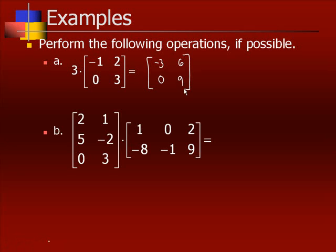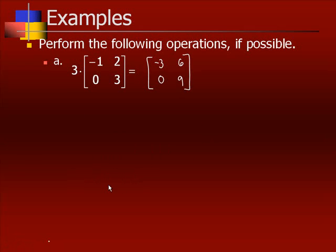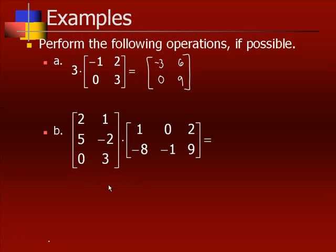The second problem is multiplication of matrices. The first matrix is a 3 by 2 and the second matrix is a 2 by 3. The middle numbers match, so it is multipliable, and the answer is going to be a 3 by 3.